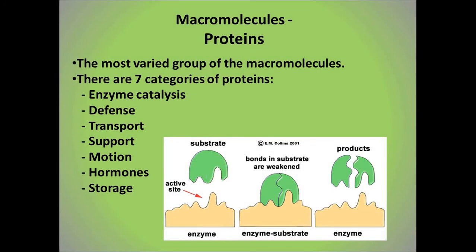The defense proteins form the basis for the body's immune system and protect the body against bacteria, viruses, and other foreign invaders. We will look at the immune system in great detail later in the year. We've discussed transport proteins when we looked at the plasma membrane — transmembrane proteins move molecules into and out of the cell, and they also move molecules around the body. For example, hemoglobin allows oxygen to be moved throughout the body while attached to the blood.